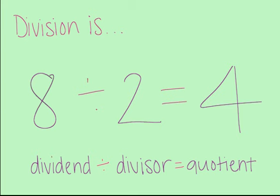First, let's look at the parts of a division problem. Here's a real division problem: eight divided by two equals four. And there are three parts to this problem. The first part, which is the eight, is called the dividend.